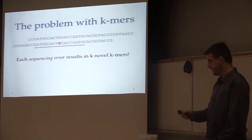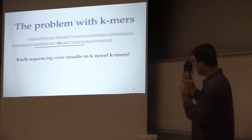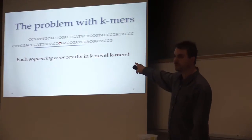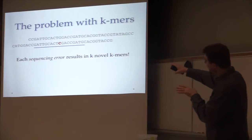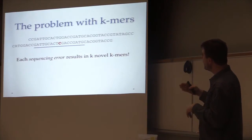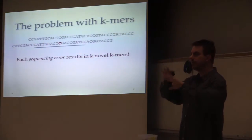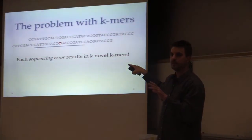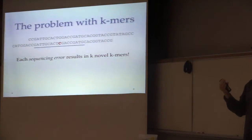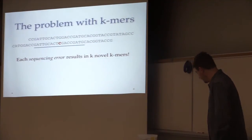So the problem with K-mers is the flip side of their convenience. As soon as you have a sequencing error, everything goes to hell. We have these same two reads as before, but I've introduced a C instead of a G at the red spot. That red base appears in ten different K-mers that are not in the first sequence. So you get this apparent inflation of data because you're breaking everything down into K-mers.